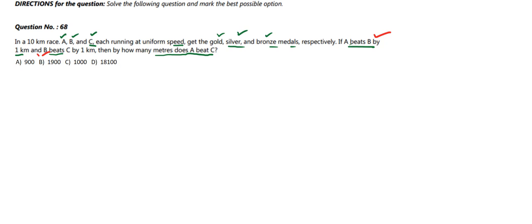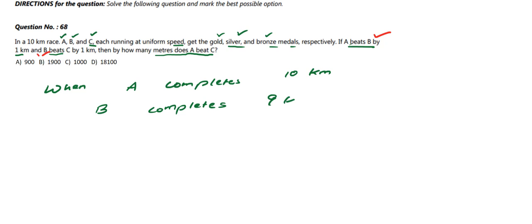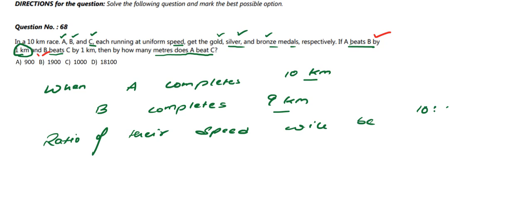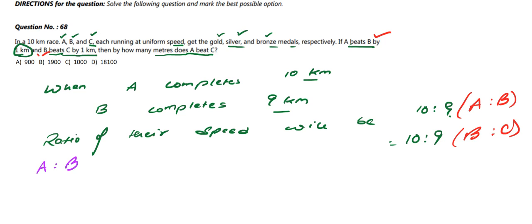Let's set up the correct solution. When A completes the full 10 kilometers, B has only completed 9 kilometers, because A beats B by 1 kilometer. So the ratio of their speeds is A to B = 10 to 9. Similarly, when B completes 10 kilometers, C completes only 9 kilometers, so B to C = 10 to 9.